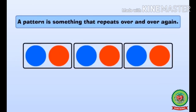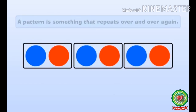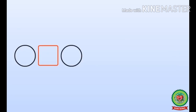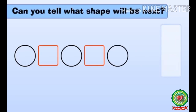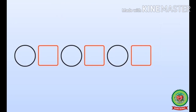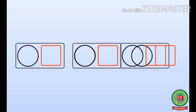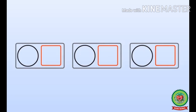Now let's see another pattern: a circle, square, circle, square, circle. Now can you tell what shape will be next — a circle or a square? It is a square. So figures are repeating again and again, and it makes a pattern.